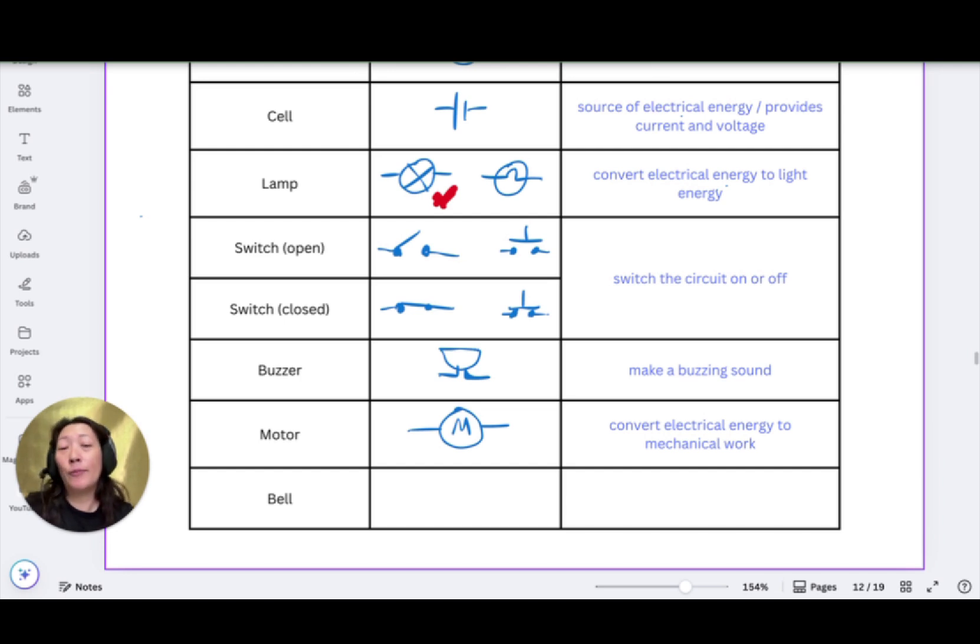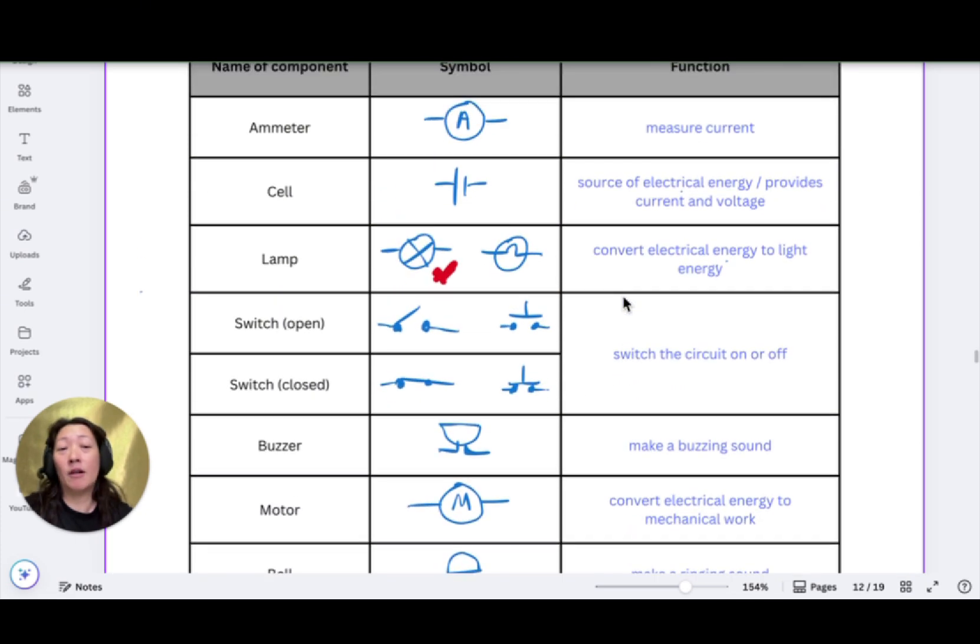Now finally, the bell. Now you might think that a bell is similar as a buzzer. It's similar, but not exactly the same. So a buzzer basically is a buzzing sound. But a bell is making a ringing sound. So the bell makes a ringing sound, like an alarm. So because they happen to be so similar, even the symbols are similar. So the buzzer basically looks like a cup. The bell has a shape that looks almost identical to a buzzer, except that the straight line part is now at the bottom. So it looks like a mushroom in this case. So these are the symbols and the functions of some of the basic components that you need to know.